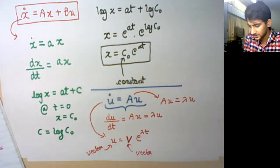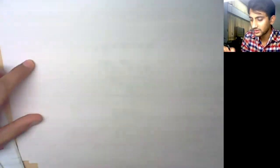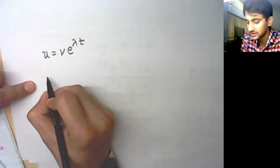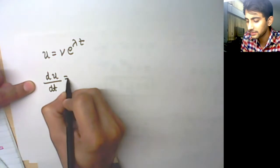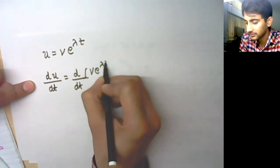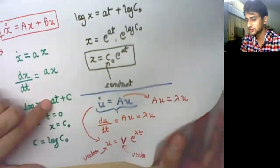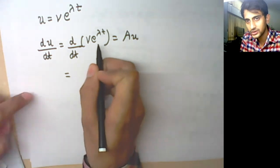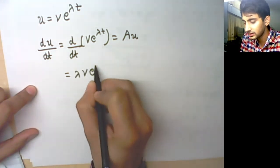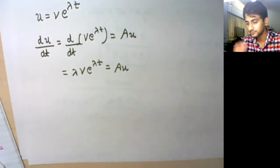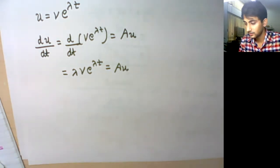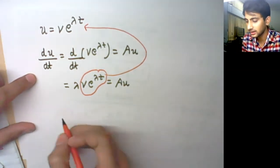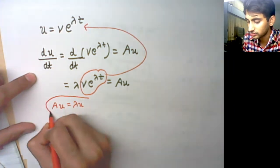If u = v·e^(λt), taking du/dt means differentiating v·e^(λt) with respect to t, giving λv·e^(λt) = Au. Notice that v·e^(λt) is just u, so we get Au = λu, confirming the eigenvalue decomposition. This is exactly the key result: we can decompose Au as λu.